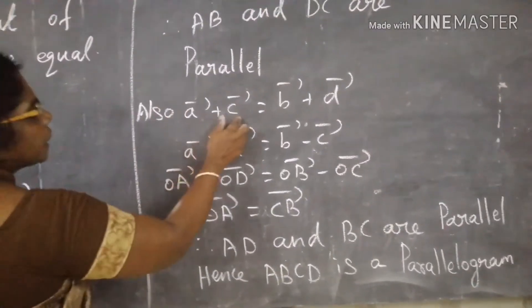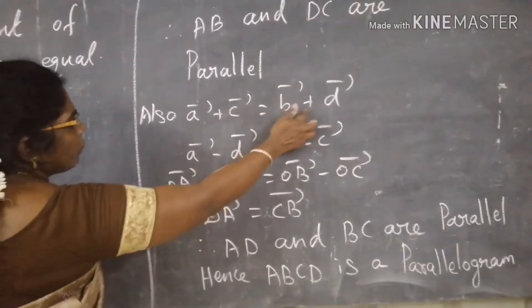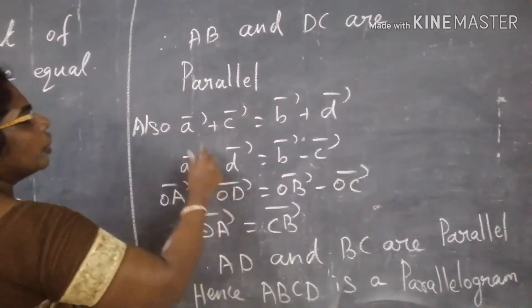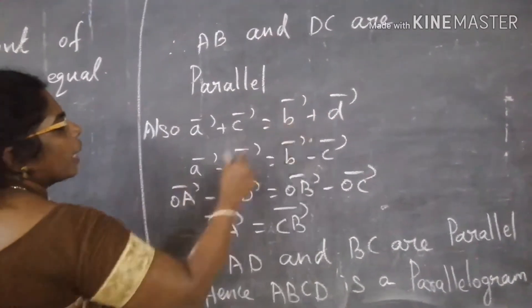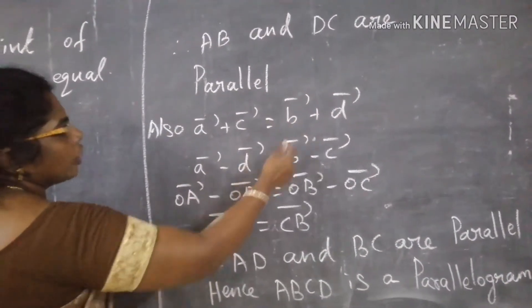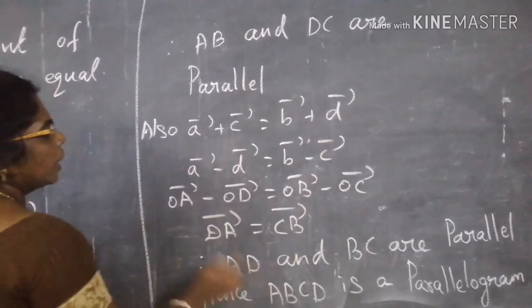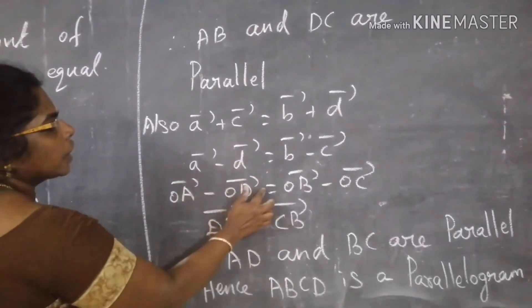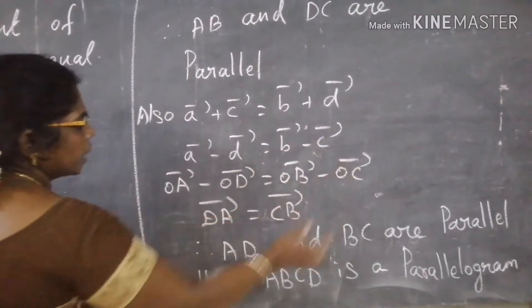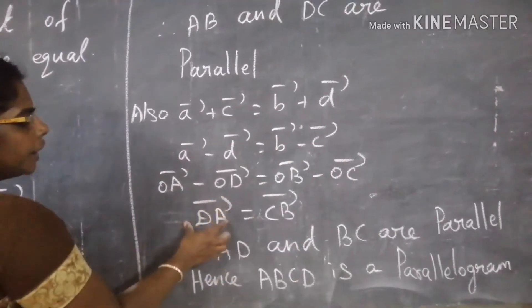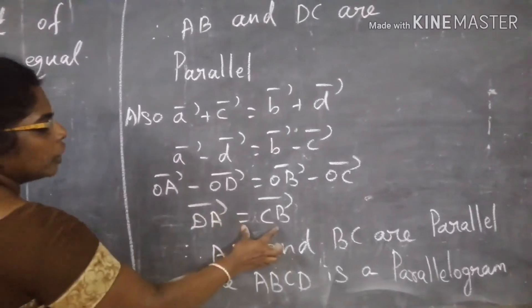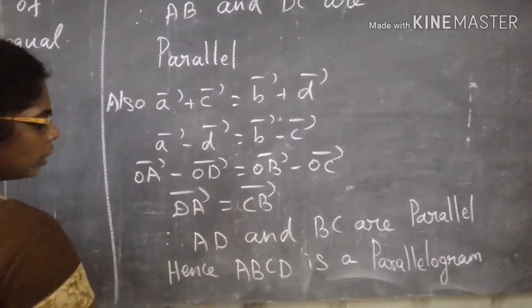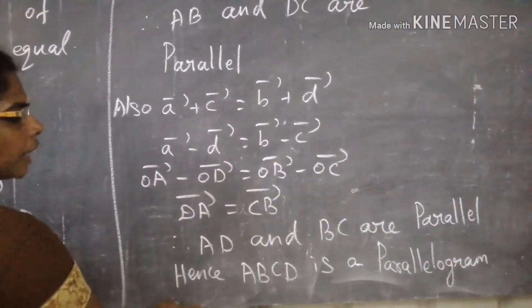Also, from A plus C equals B plus D, we get A minus D equals B minus C, so OA minus OD equals OB minus OC, meaning DA equals CB. Therefore AD and BC are parallel, hence ABCD is a parallelogram.